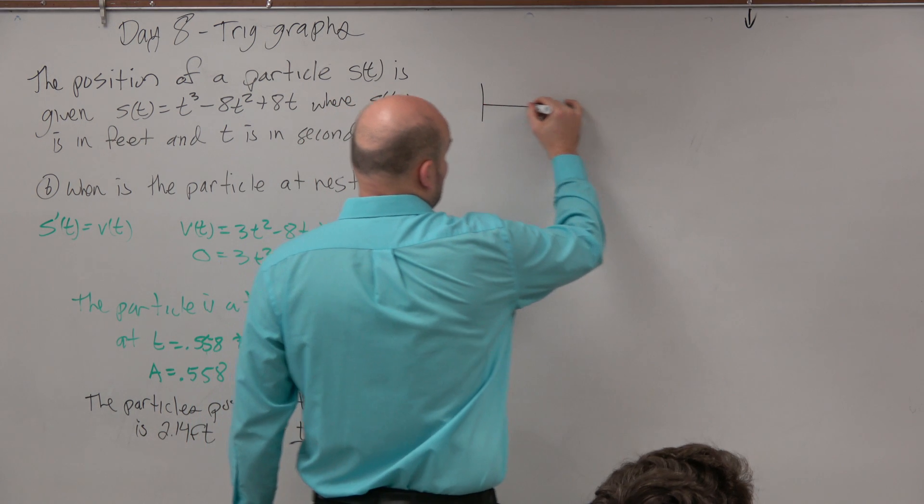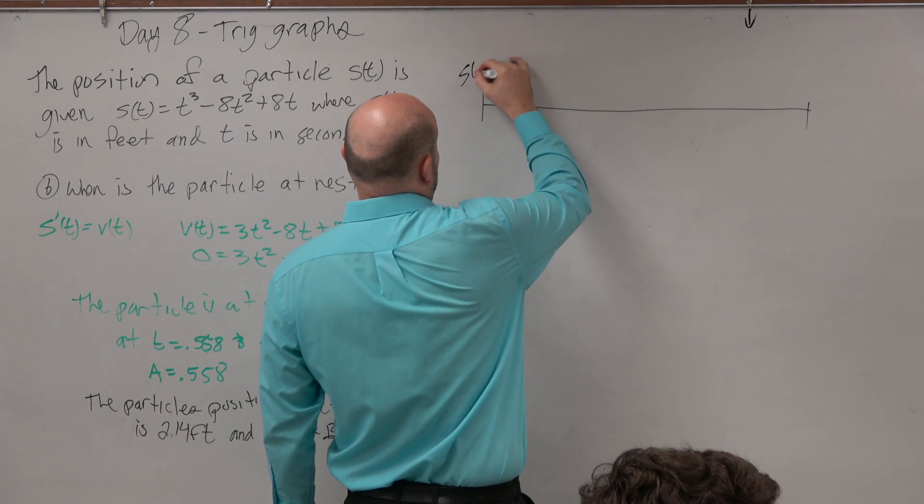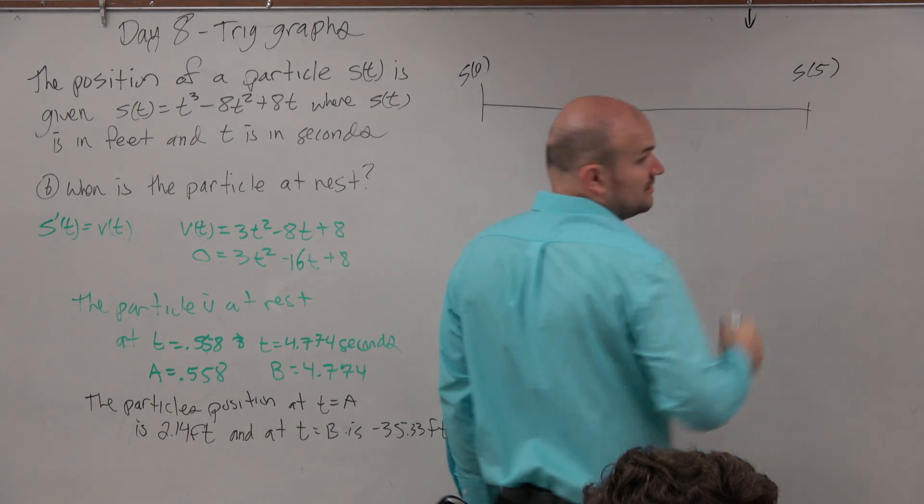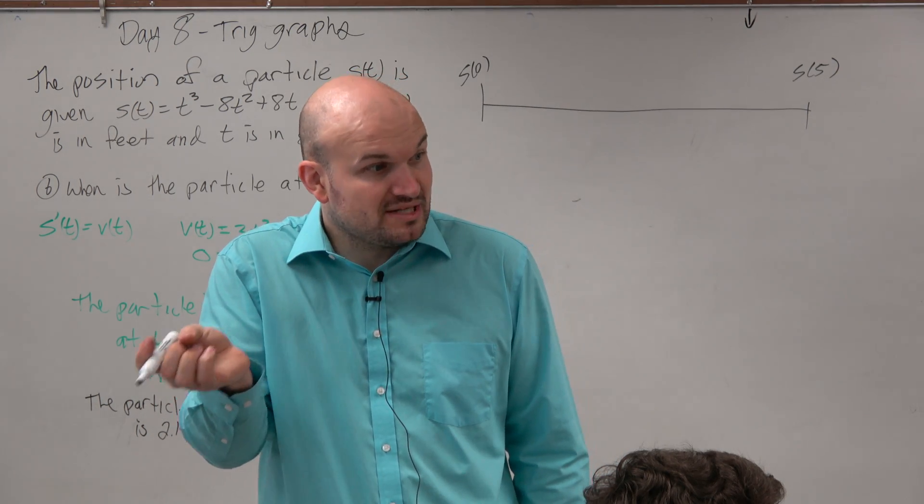So basically guys, the best way to easily recognize this is say, all right, well, we have s of 0 and we have s of 5. s represents the position, and 0 and 5 represents the distance.